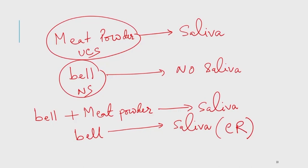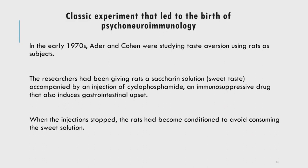This classical conditioning also happens in human lives. For example, many fear responses we learn are learned by association. If you had a car accident, the next time you ride a car there may automatically be a fear response, because you learned to associate the car with accidents. Many fear responses in human lives could be classically conditioned. Ader and Cohen were doing a similar kind of experiment using rats, trying to see taste aversion among the rats.